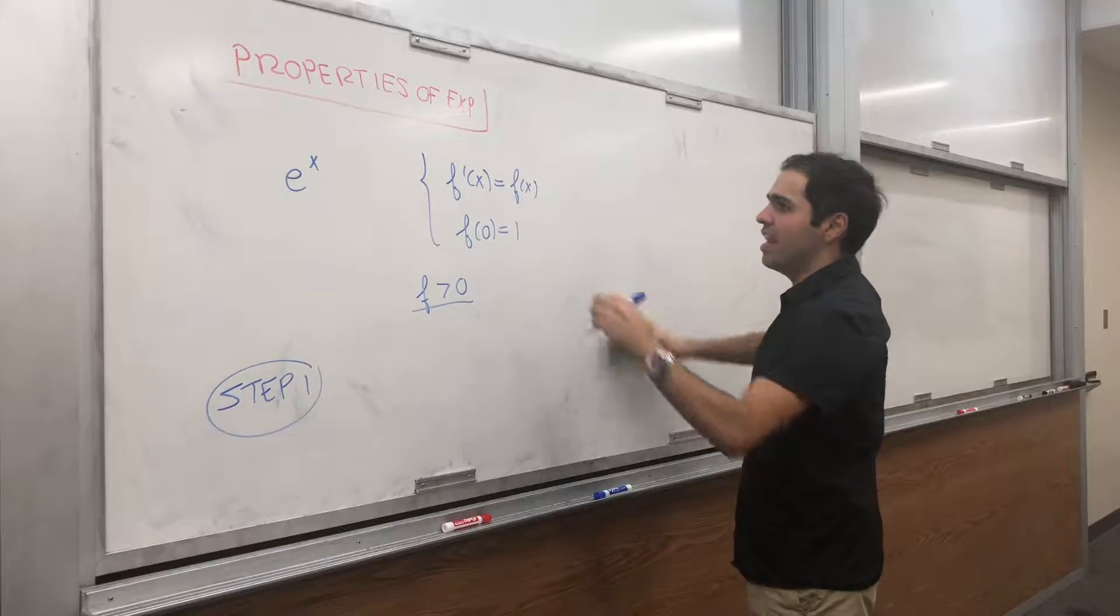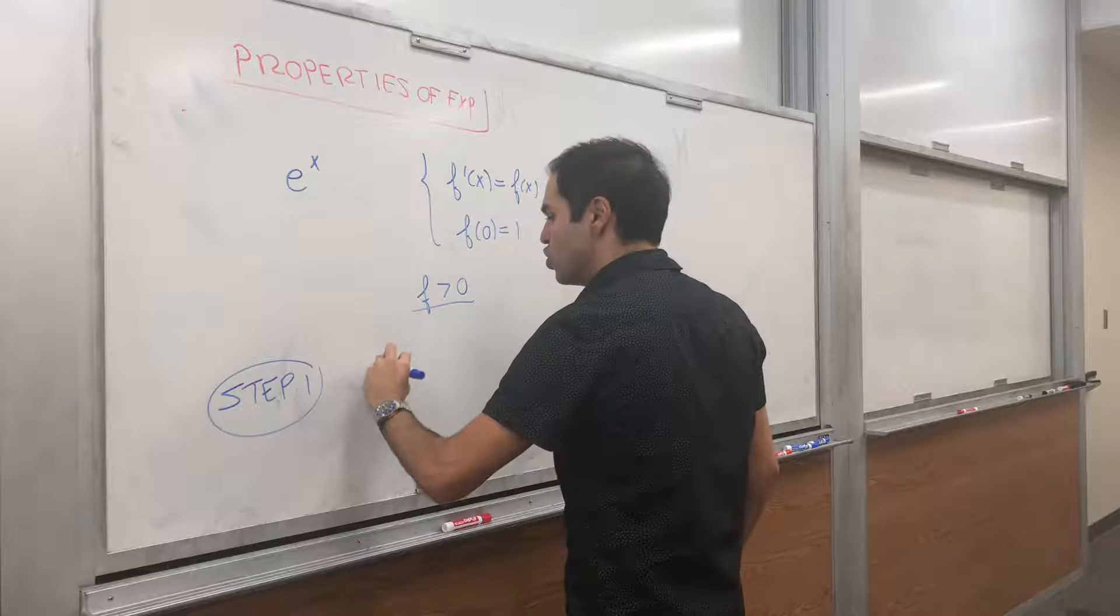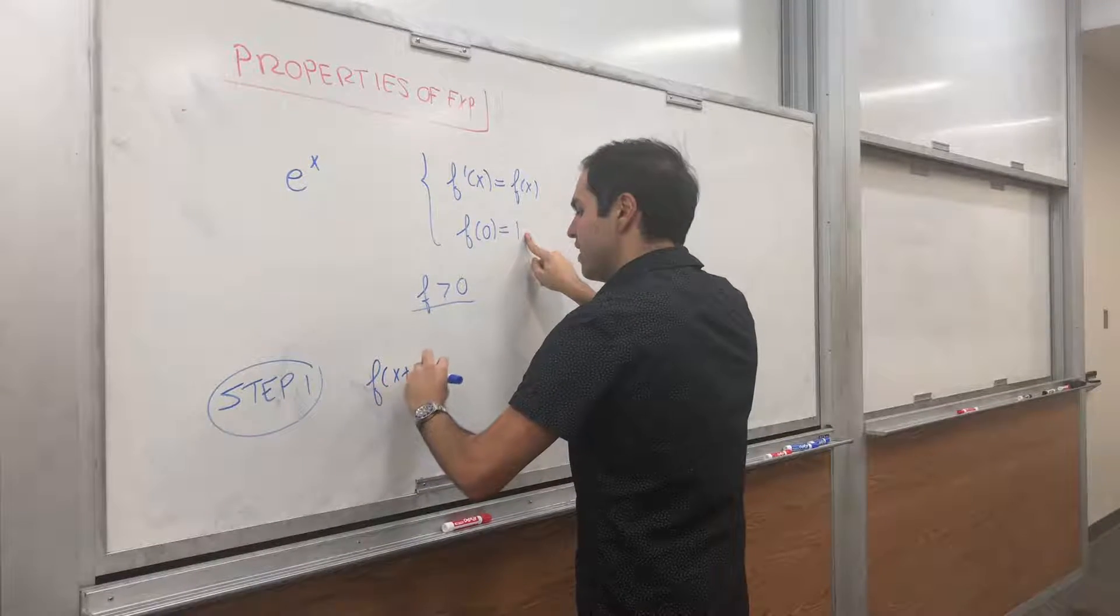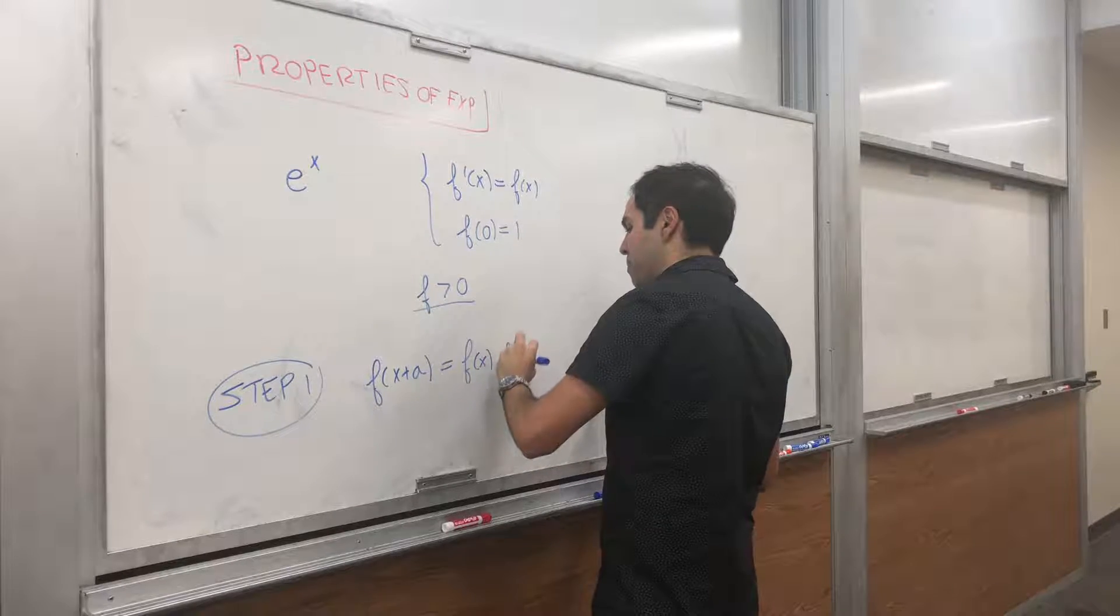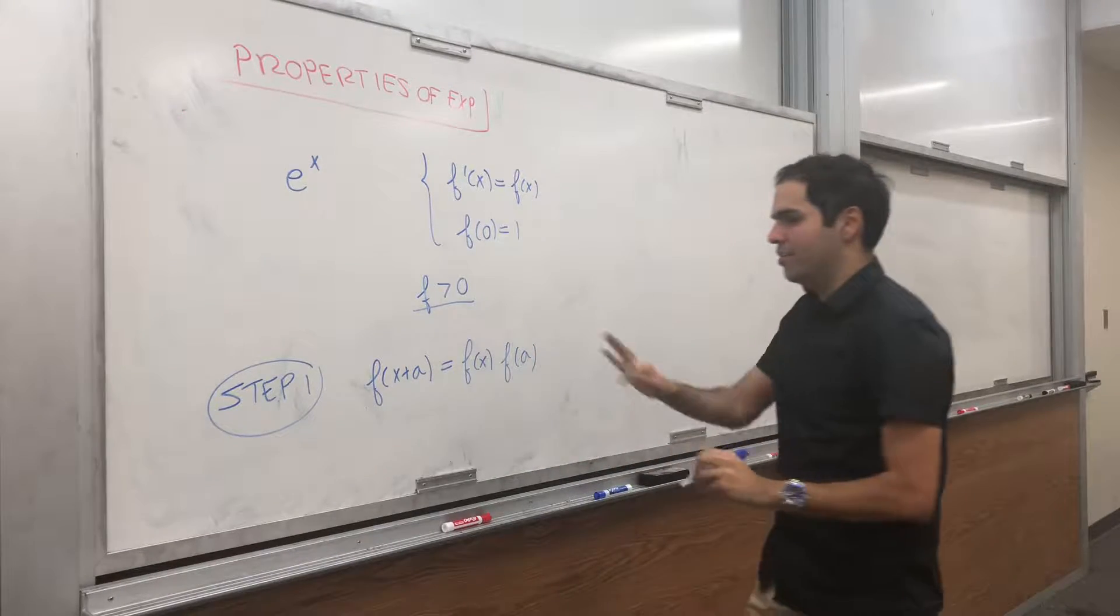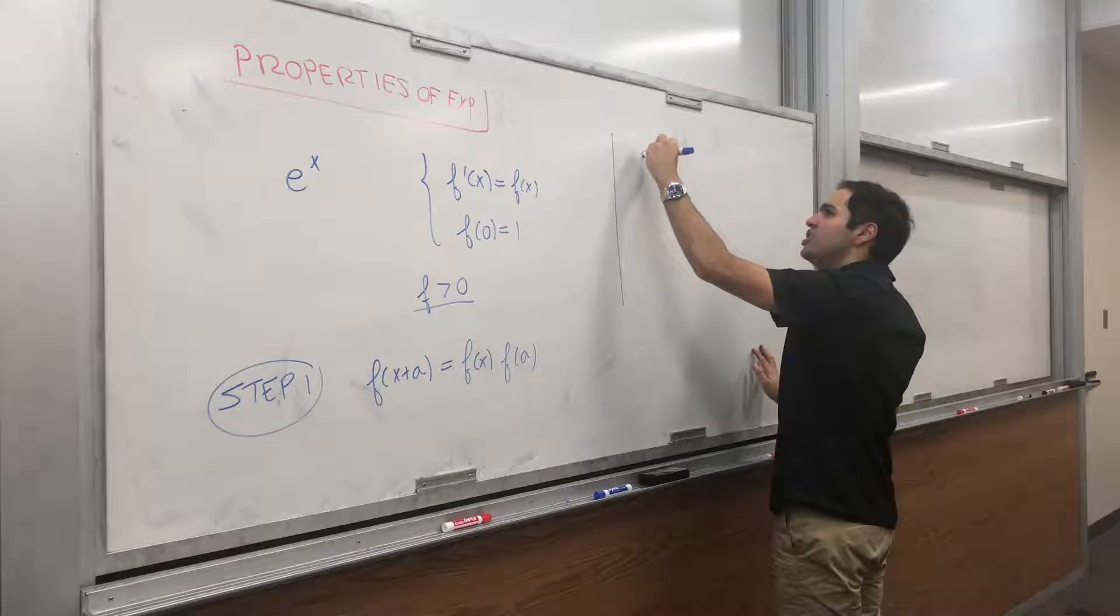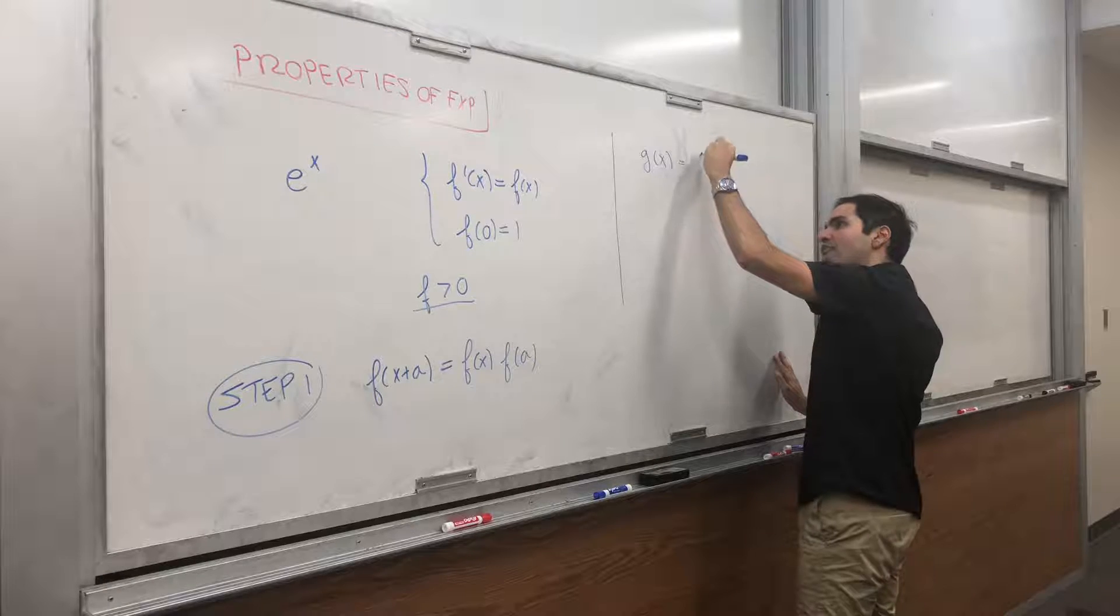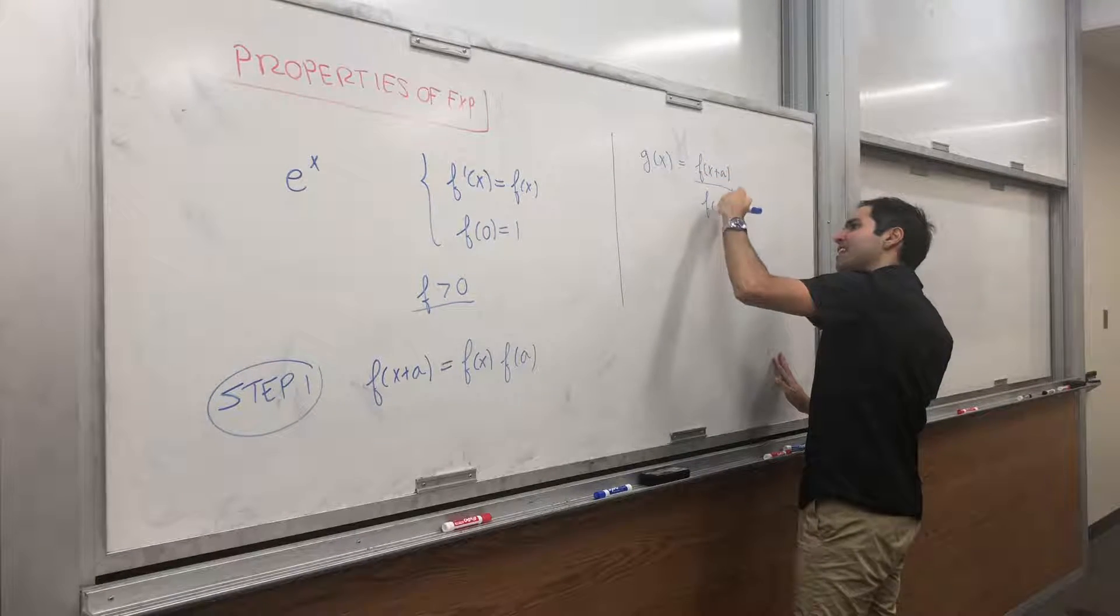So let's call this function f, just the exponential function. And let's just show, with this property, that f of x plus a is f of x times f of a, where x and a are any constants. So now let g of x be f of x plus a over f of x.